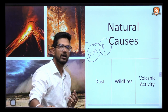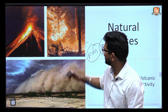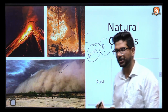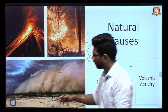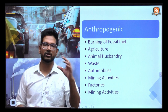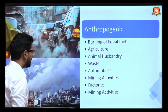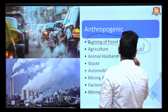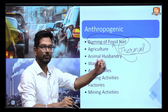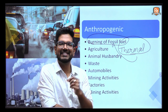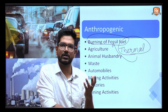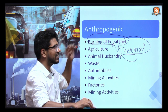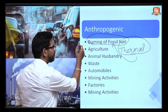We can try to contain natural forest fires but cannot eliminate them, same with volcanic eruptions. Now for anthropogenic causes, the foremost one is the burning of fossil fuels. Thermal power plants fall under this category. When we burn fossil fuels, they release a lot of chemical gases like sulphur dioxide, oxides of nitrogen, carbon monoxide, and carbon dioxide, which are harmful for air quality.